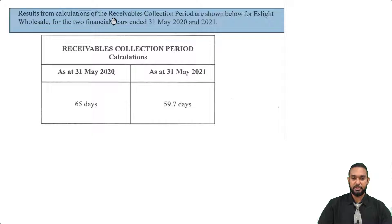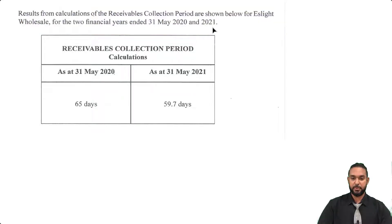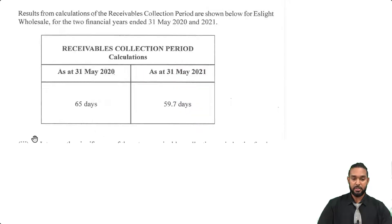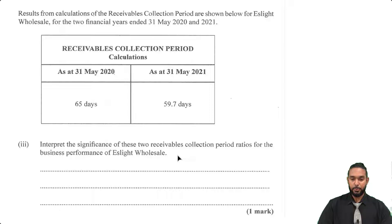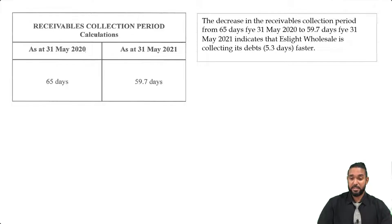Results from calculations of the receivables collection period are shown for S-Lite Wholesale for the two financial years ended 31st May 2020 and 2021. As at 31st May 2020, the collection period was 65 days, and as at 31st May 2021, the collection period was 59.7 days. The question wants you to interpret the significance of the movement in the ratios — what does it mean that the ratio went down from 65 days to 59.7 days? The decrease in the receivables collection period from 65 days (FYE 31st May 2020) to 59.7 days (FYE 31st May 2021) indicates that S-Lite Wholesale is collecting its debt 5.3 days faster.